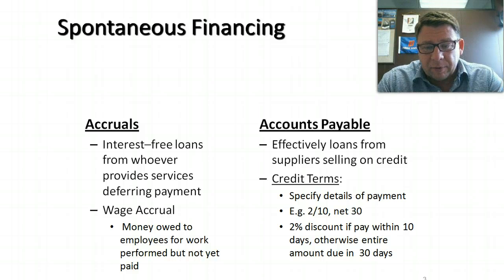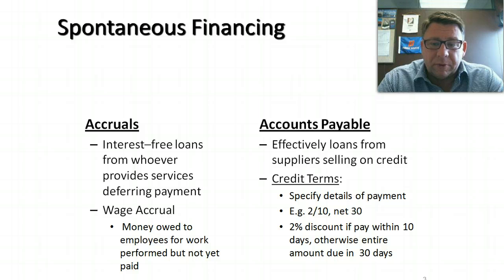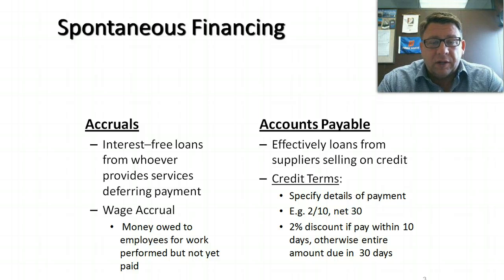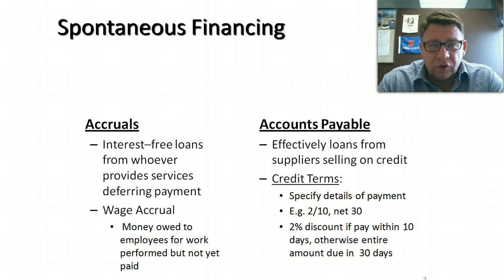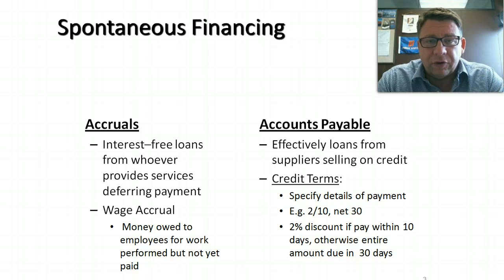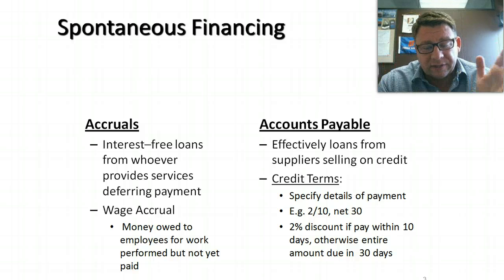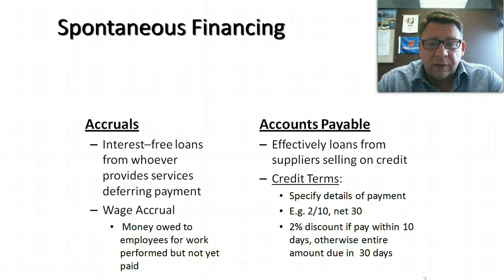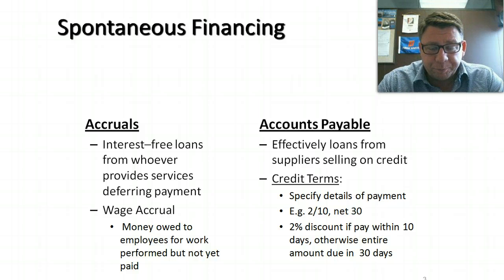Accounts payable — kind of similar. These are effectively loans from suppliers for selling on credit. You call up your supplier, order goods, they deliver it to you, and they tell you to pay within 30 days. That's an interest-free loan for 30 days. The vendor has provided you with that credit.